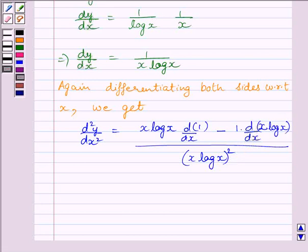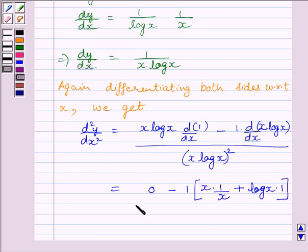We have applied the quotient rule here. Now this is further equal to 0 minus 1 multiplied by derivative of x log x. The derivative of x log x is equal to x multiplied by 1 upon x plus log x multiplied by 1, upon x log x whole square.